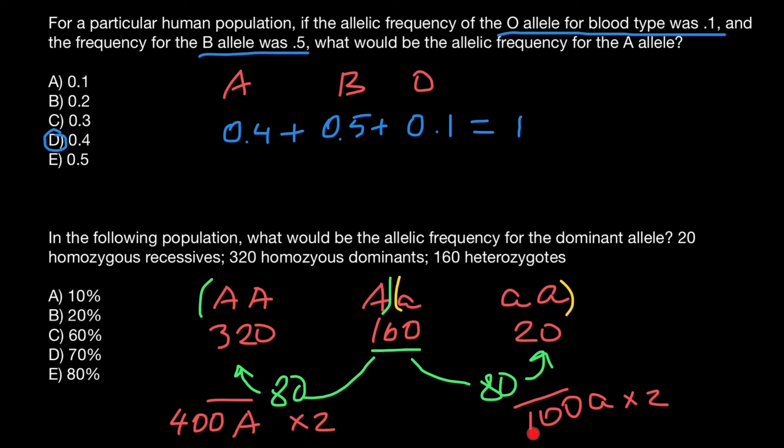So 400 and 100, if we multiply both numbers by two, the ratio is going to be the same. So here we get 800 and here we get 200. 800 plus 200 is going to be 1000.